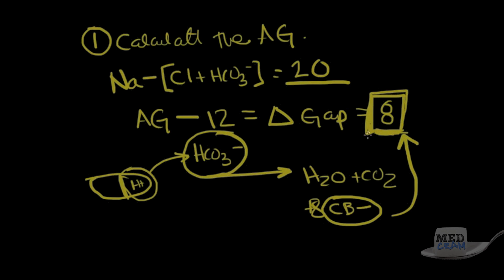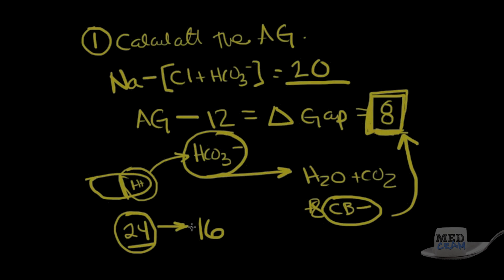If we started with 24 bicarbonate molecules (normal) and we calculate a delta gap of 8, the new bicarbonate level should be 16. We took our anion gap of 20, subtracted the normal anion gap of 12, found 8 more than normal, and the body dealt with those 8 by combining with bicarb — so bicarbonate drops from 24 down to 16.